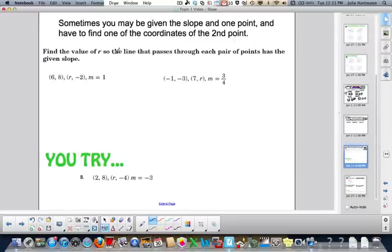Lastly, sometimes you may be given the slope and one point and have to find one of the coordinates of the second point. So the directions here say find the value of r, and here's r right here. So the line that passes through each pair of points has the given slope. So you want the line that passes through (6, 8) and (r, -2) to have a slope of 1.